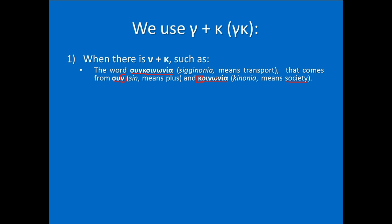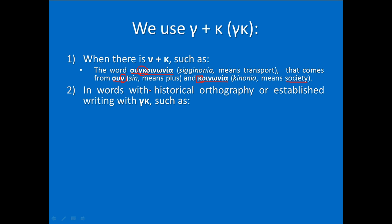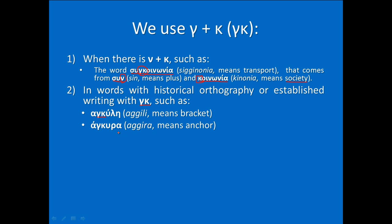Another rule: words with historical orthography established with Gamma-Gamma use double Gamma. Such as LARINGAS meaning 'larynx', ANGELOS meaning 'angel' — used as a name written with capital Alpha — and ANGLIA meaning 'England', also written with double Gamma.